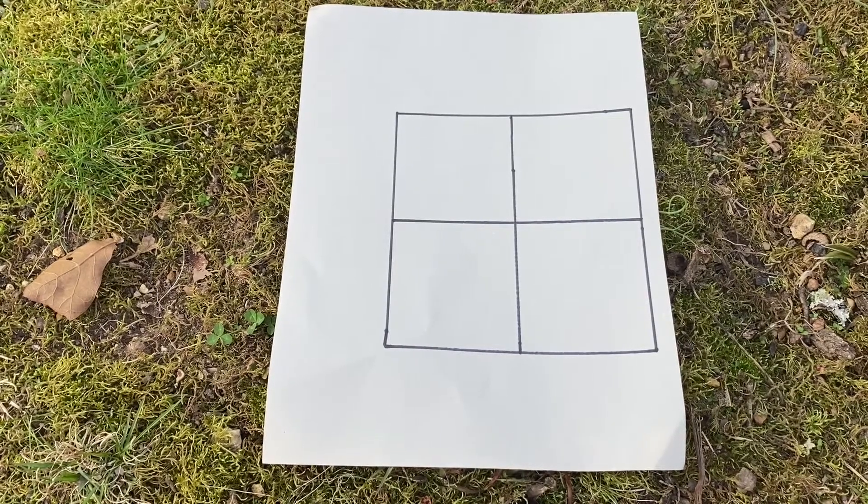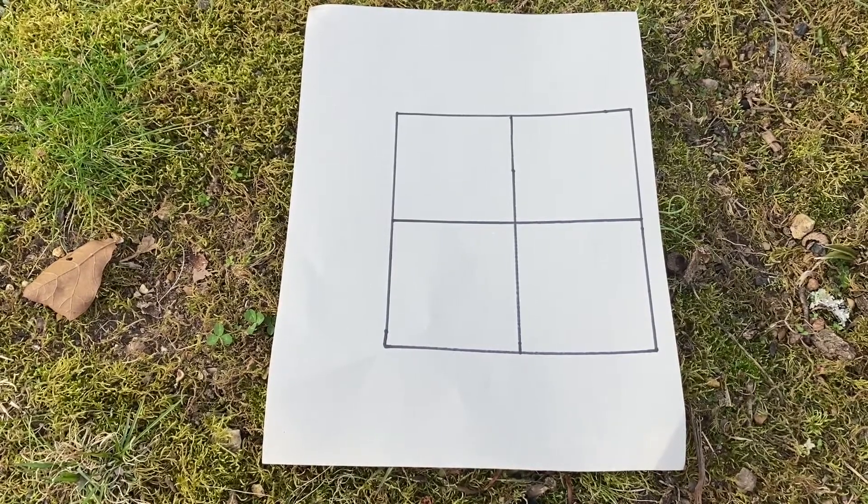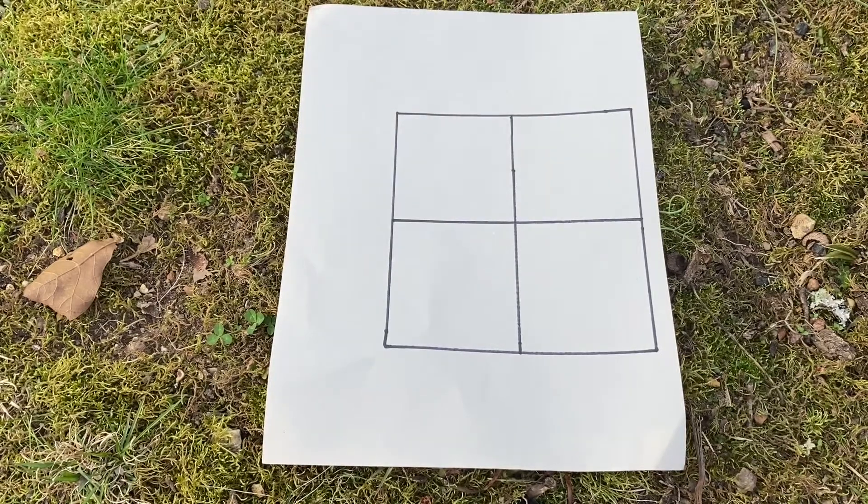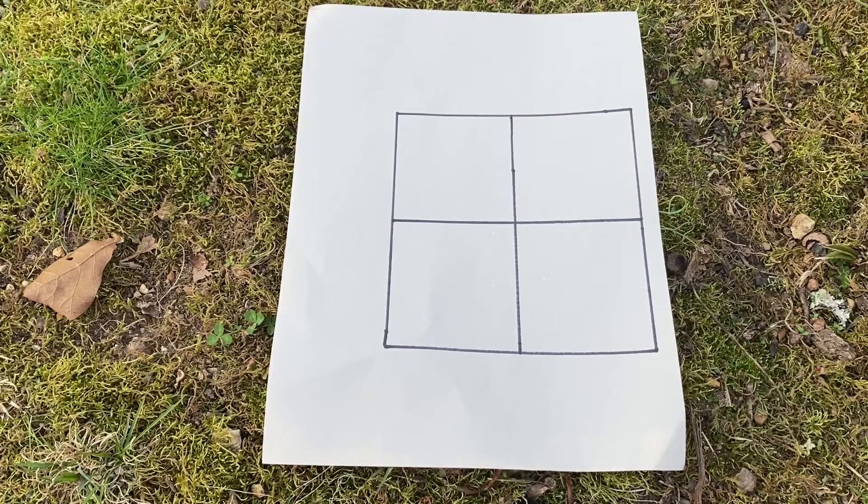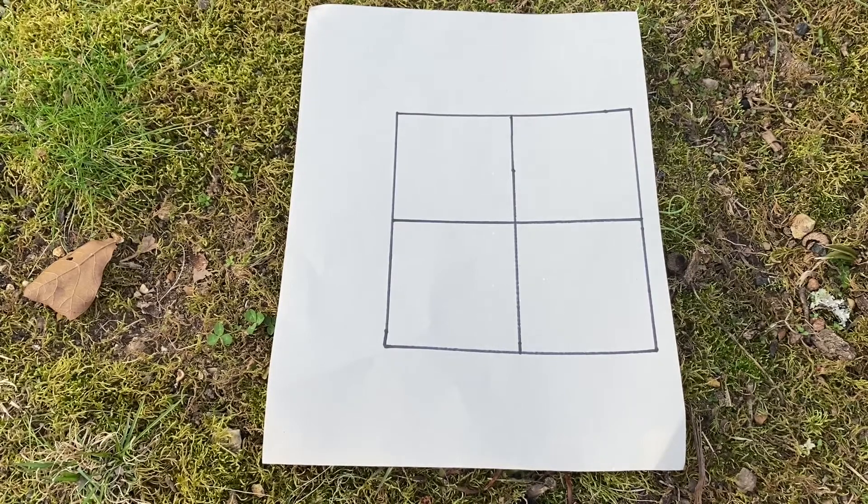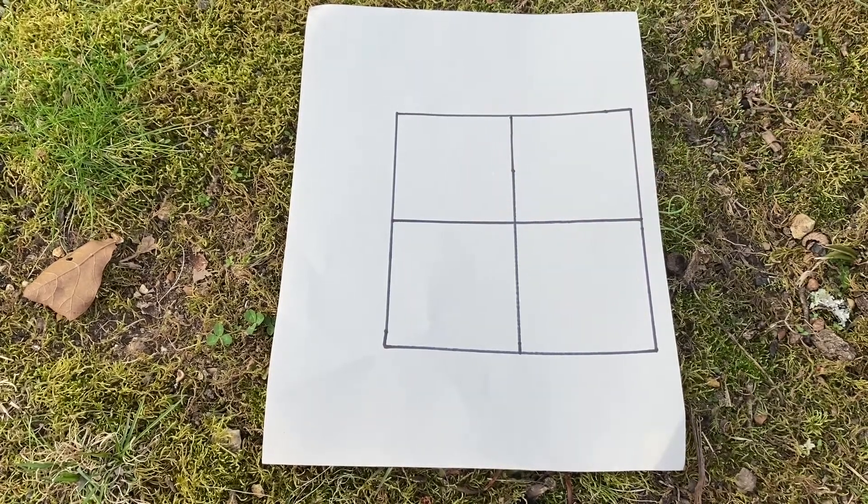So this is a Punnett square. When you're using a Punnett square, you're going to use this side and this side. You're going to put the traits of your parents on those sides. Right now we're going to look at how blue eyes and brown eyes are going to interact and come out with the potential eye colors of the children of two parents.